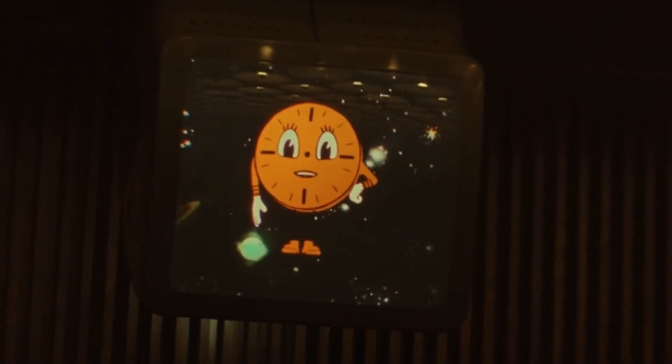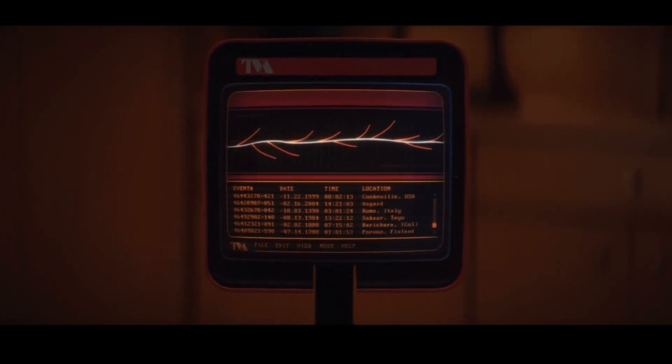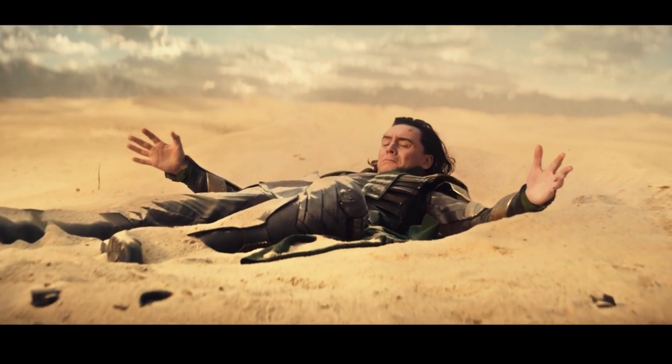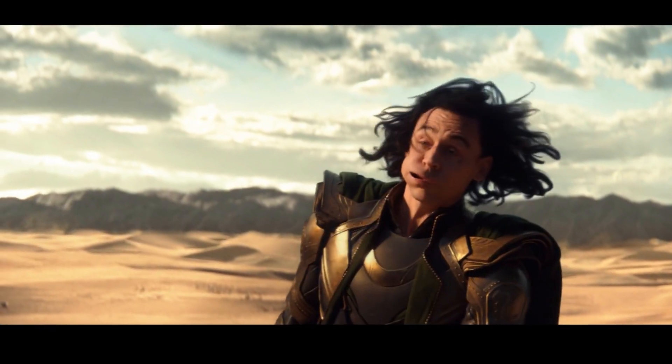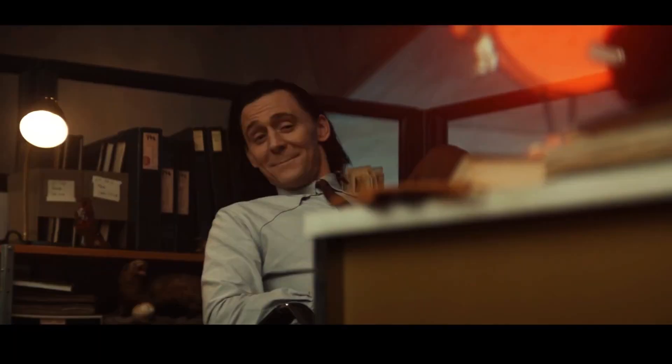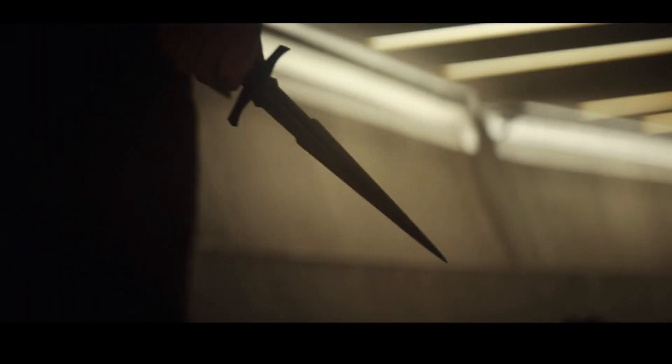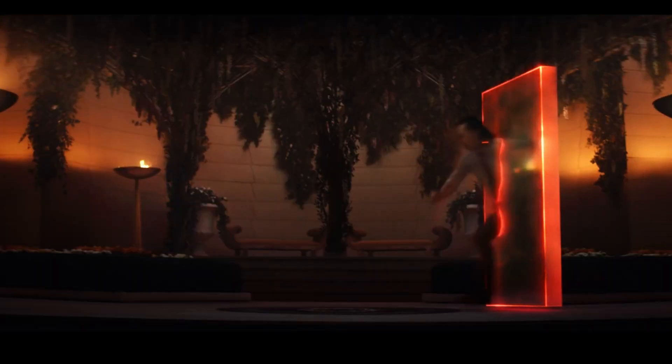And then I ran into the TVA, Time Variance Authority. I'm Miss Millet. Now the TVA's mission is to preserve the sacred timeline, where there is one timeline and anytime there's any sort of divergence or variance, they come in and they snip it off. And there is one particular person who causes a lot of variance, and that is Loki. So he grabbed the Tesseract and made a run for it. And well, they didn't like that. And then if you've seen the show itself, then you know that they took a variant of Loki and they recruited him. Then after an escaped attempt and a betrayal, Loki was thrown into a time loop.